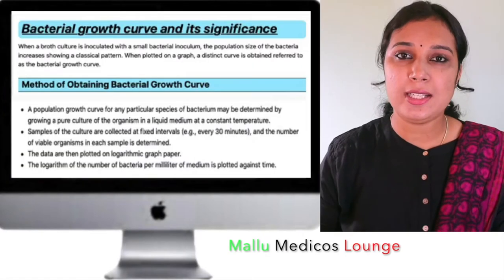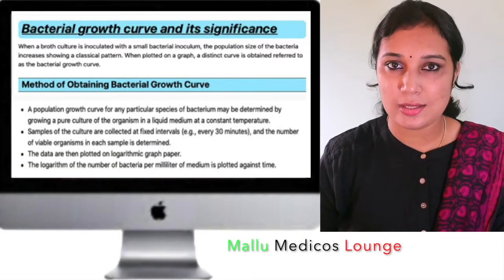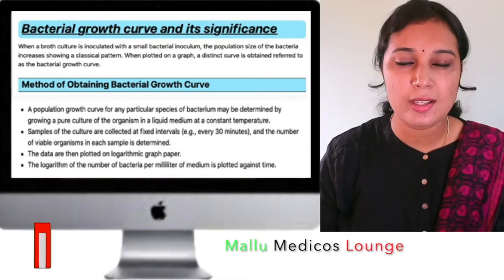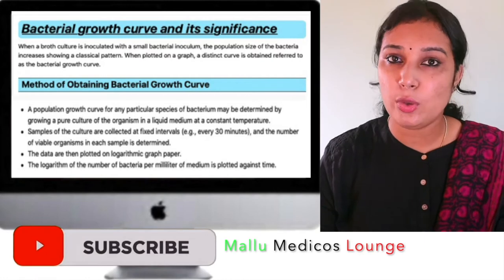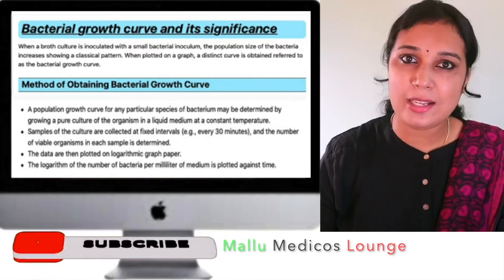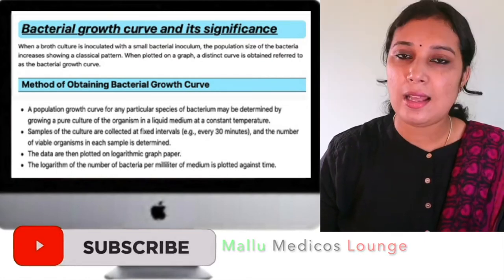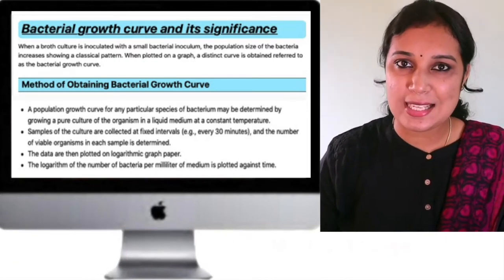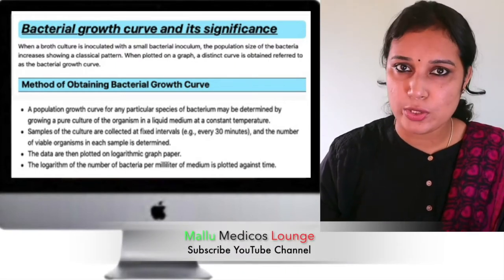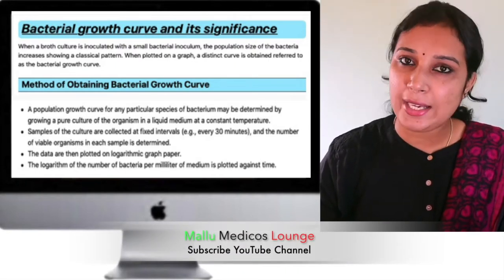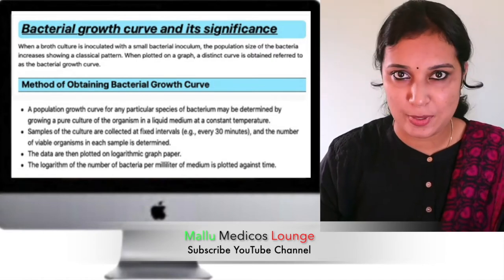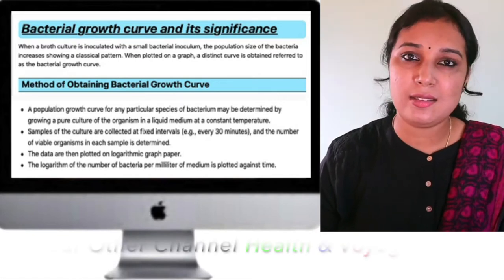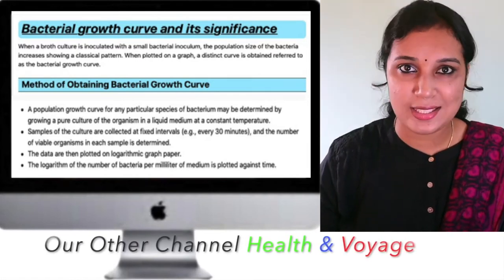We need to determine bacterial growth. We need a suspension — it can be a peptone water, it can be a glucose phosphate solution, or a broth suspension. We are inoculating our bacteria, and after inoculation we are incubating the suspension. At regular intervals, for example every 30 minutes, we are collecting a small portion from this suspension and enumerating the number of viable bacteria present. If we plot it on a graph, we will get a typical pattern — this is what is called the bacterial growth curve.